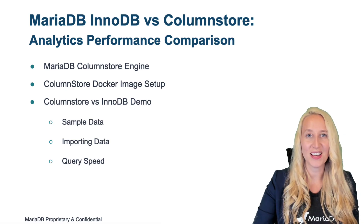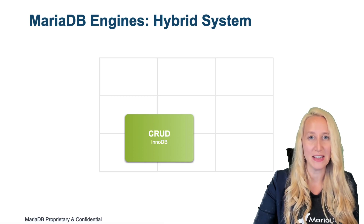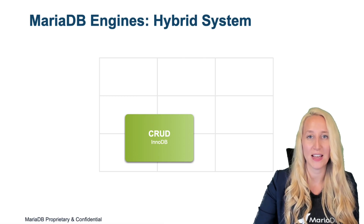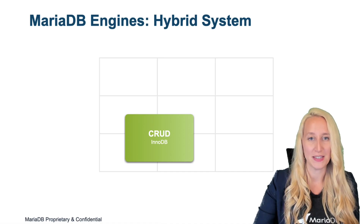To understand ColumnStore engine, we'll first look at how it differs from InnoDB engine. InnoDB is the default engine in MariaDB and is transactional. This is what you'll use for running most of your websites, applications — anything that's going to be creating, reading, updating, deleting — CRUD on a rapid basis.